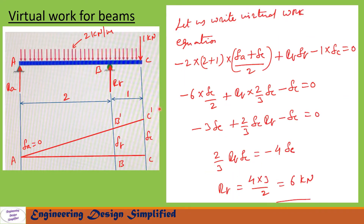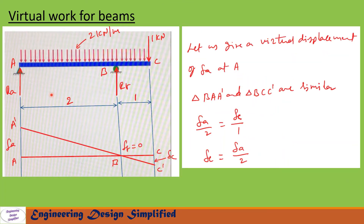From this equation we get delta-B equal to two-thirds of delta-C. Now let us write the virtual work equation: minus 2 × (2+1) × (delta-A + delta-C)/2 — where 2 kN/m is the UDL, (2+1) is the total length, and the average displacement between A and C is (delta-A + delta-C)/2 — plus R_B × delta-B, minus 1 × delta-C equals zero. Substituting delta-B and simplifying, we get reaction at B, R_B = 6 kN.